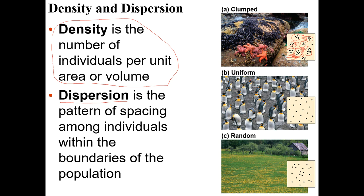Uniform distribution typically occurs in territorial animals that fight to defend an area, ending up evenly spaced. You might also see it in plants if one secretes something that keeps others away. Random dispersion is exactly what it sounds like — organisms end up wherever they end up. There are no better resources in one area versus another, no territoriality, and no repulsion — they're just where they are.